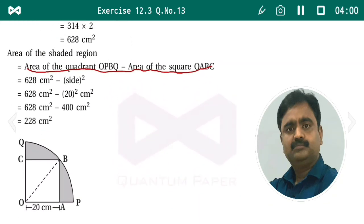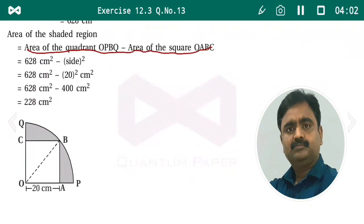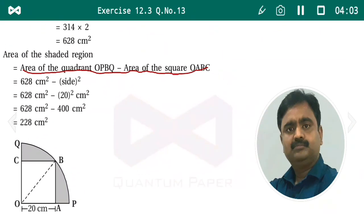So friends, the area of the shaded portion is 228 centimeter square. I hope you all understood these questions. Pause the video and note it down in your notebook.